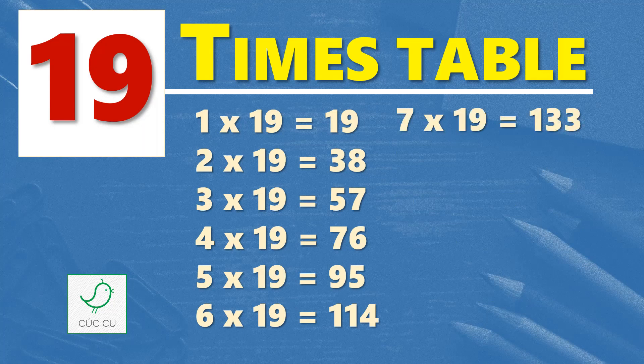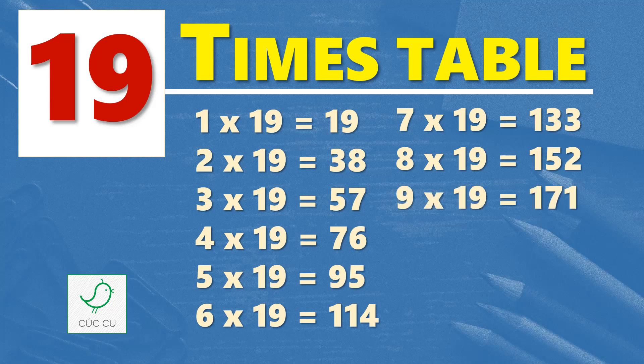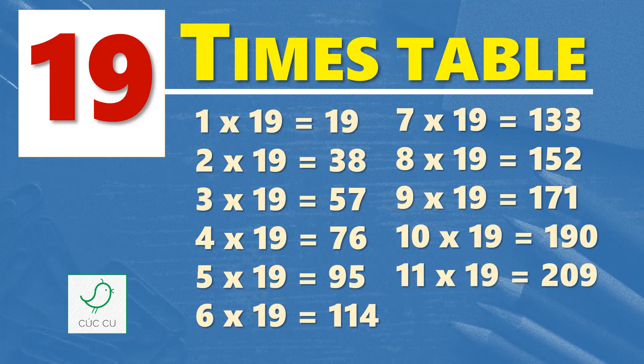Seven times nineteen are one hundred and thirty-three, eight times nineteen are one hundred and fifty-two, nine times nineteen are one hundred and seventy-one, ten times nineteen are one hundred and ninety, eleven times nineteen are two hundred and nine, twelve times nineteen are two hundred and twenty-eight.